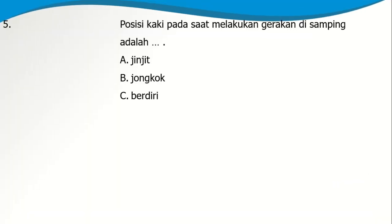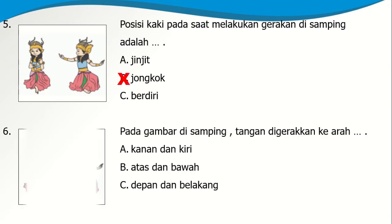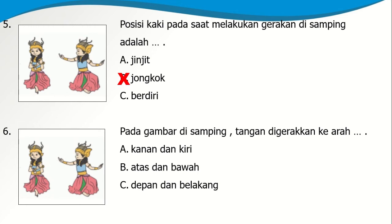Soal nomor 5: Posisi kaki pada saat melakukan gerakan di samping adalah A. Jinjit, B. Jongkok, atau C. Berdiri. Ya, dalam posisi ini kita jongkok. Soal nomor 6: Pada gambar di samping tangan digerakkan ke arah A. Kanan dan kiri, B. Atas dan bawah, atau C. Depan dan belakang. Ya, tangan ini digerakkan ke arah kanan dan kiri.